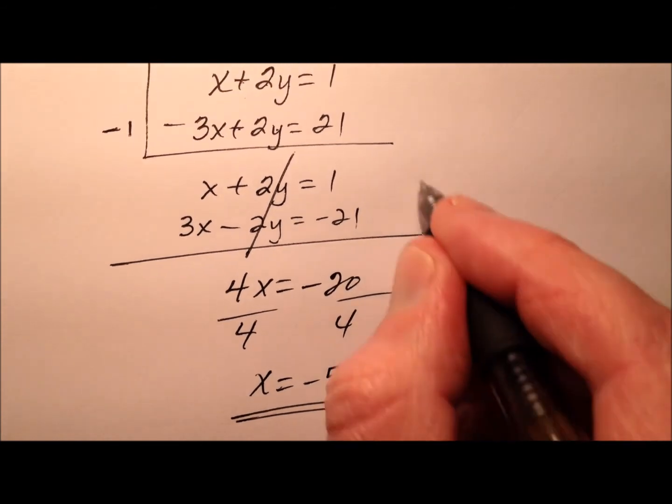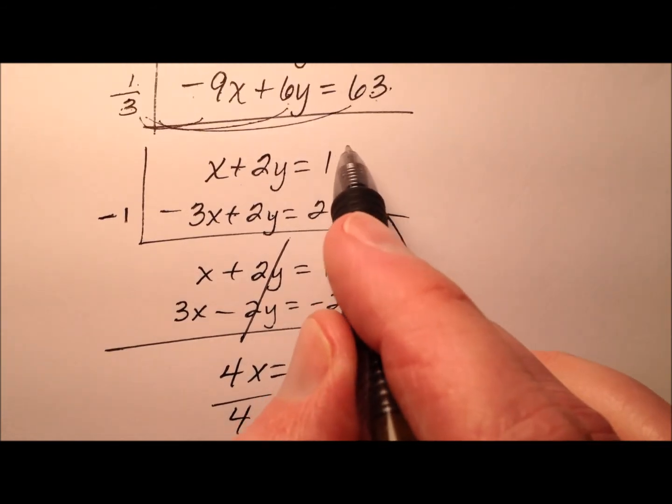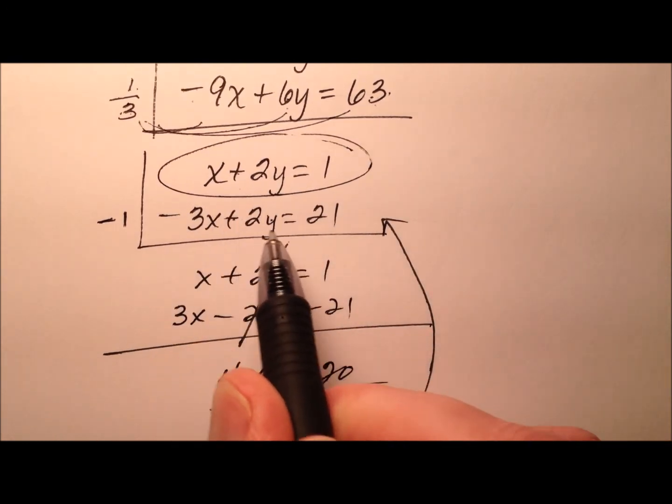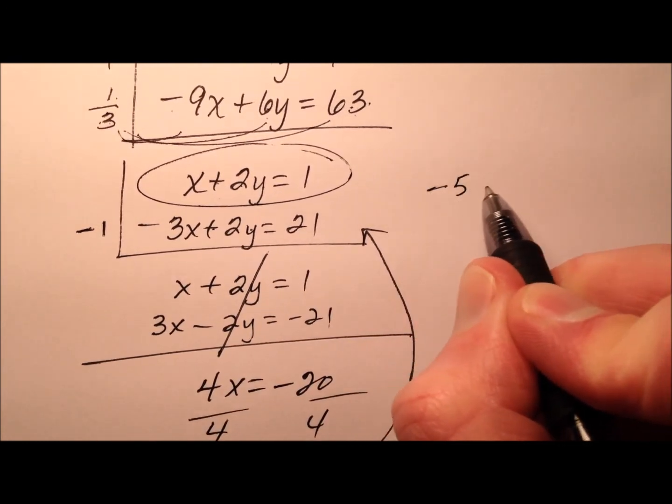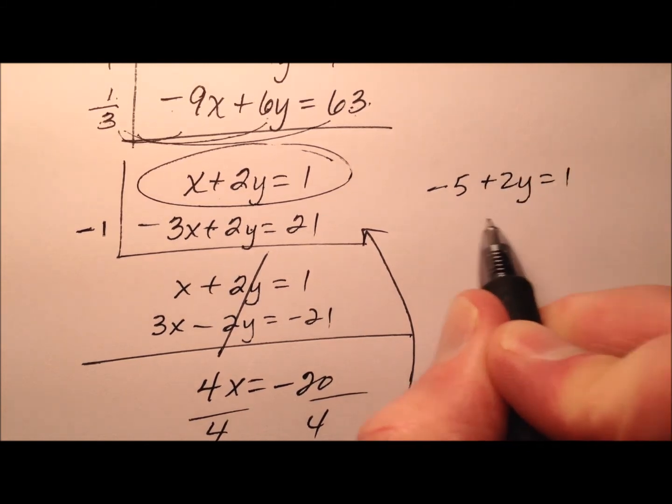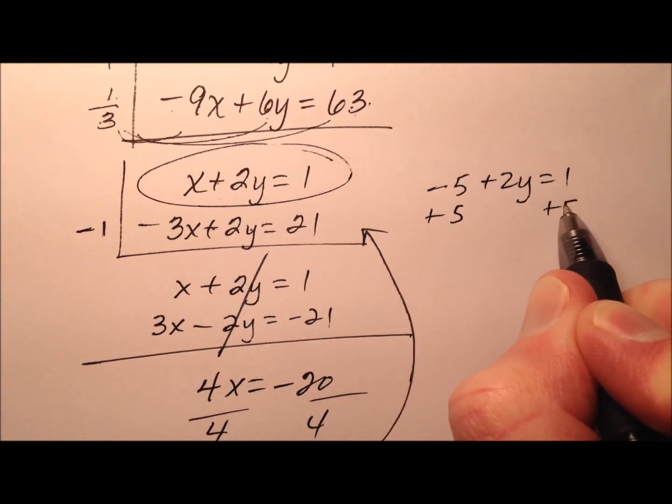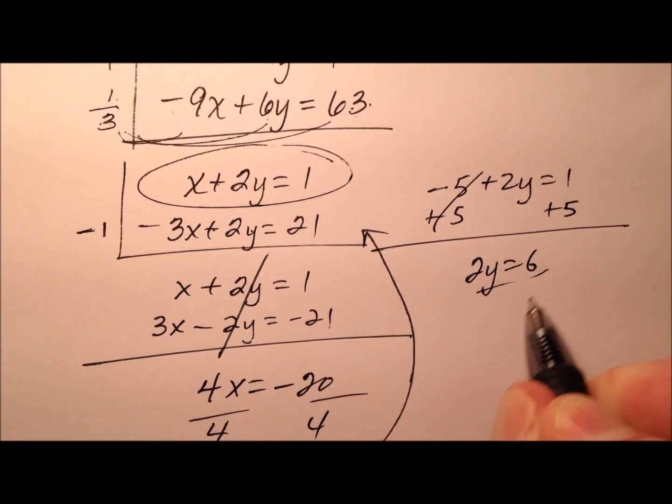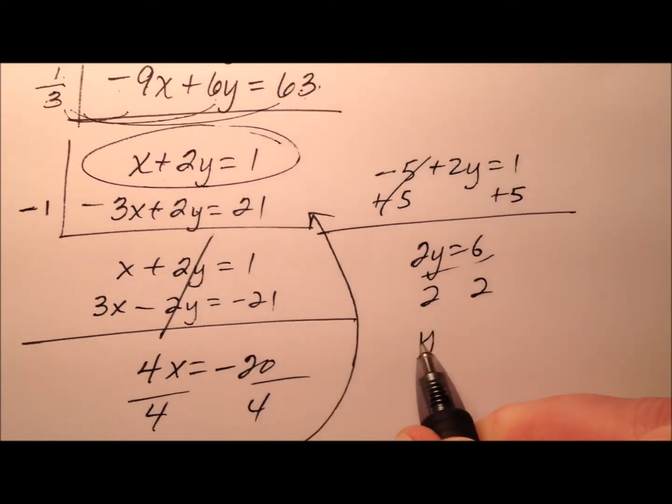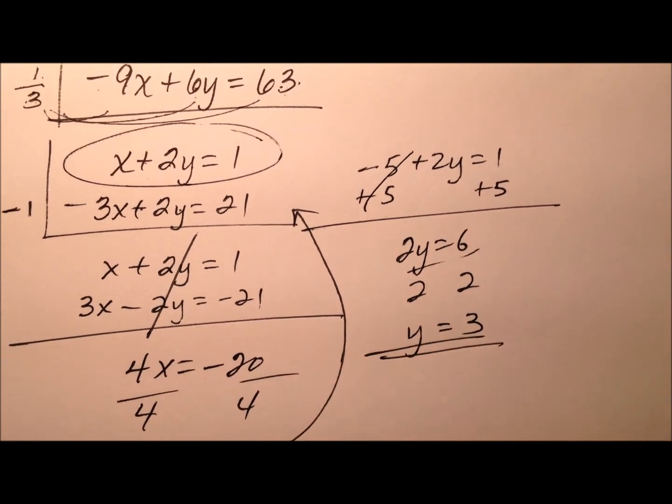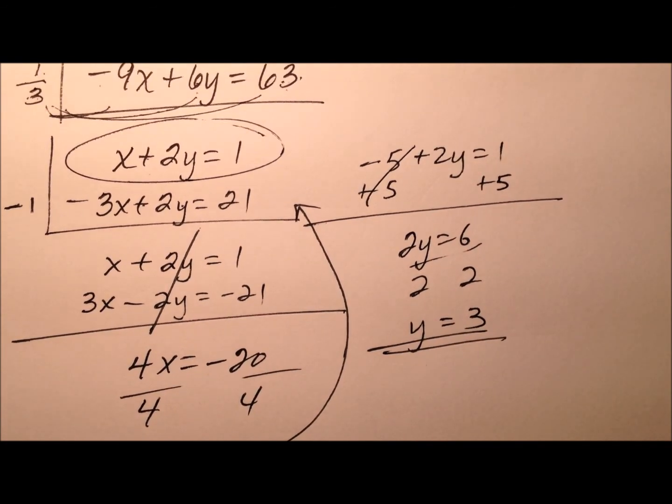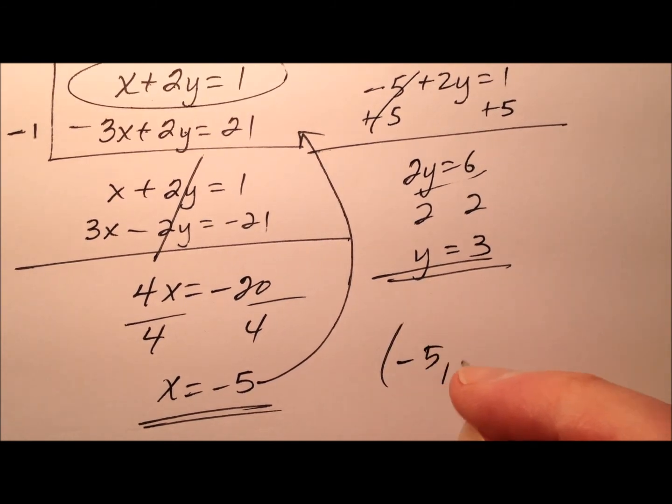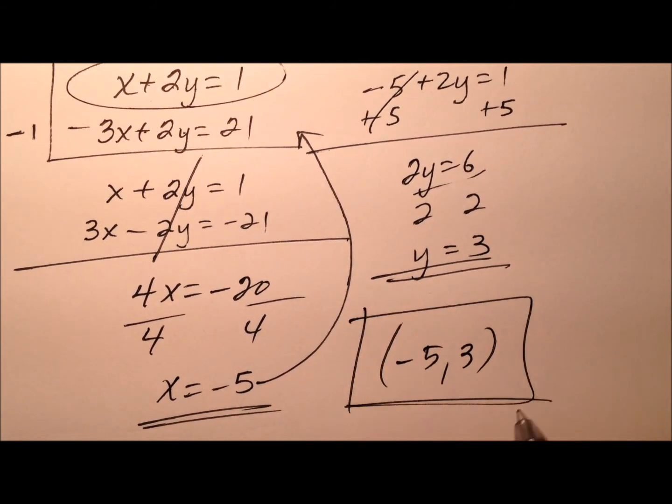And when I plug it back in, I've got choices. I'm going to plug it back into the equations that are much smaller. So let's plug the negative 5 right there, and then plus 2y equals 1. When I add 5 on both sides, 2y equals 6. And ultimately, y equals 3 when I finish solving. So this ordered pair becomes negative 5, 3 for the solution.